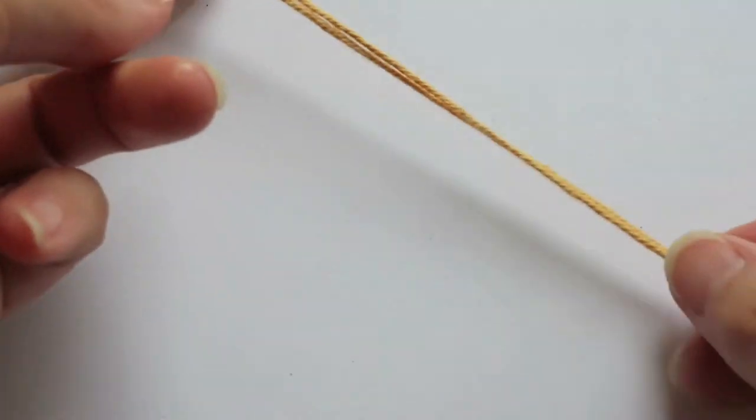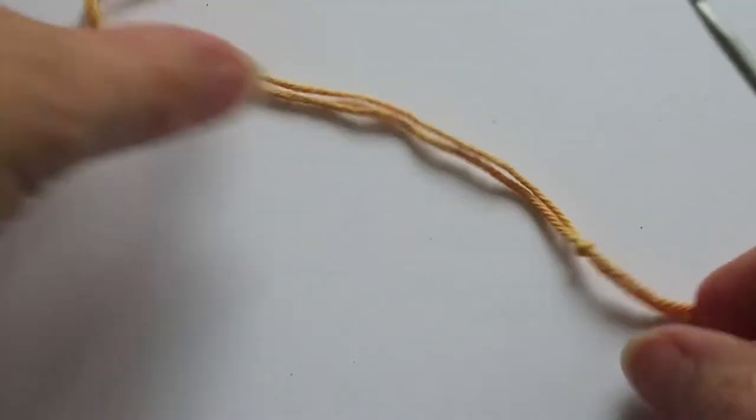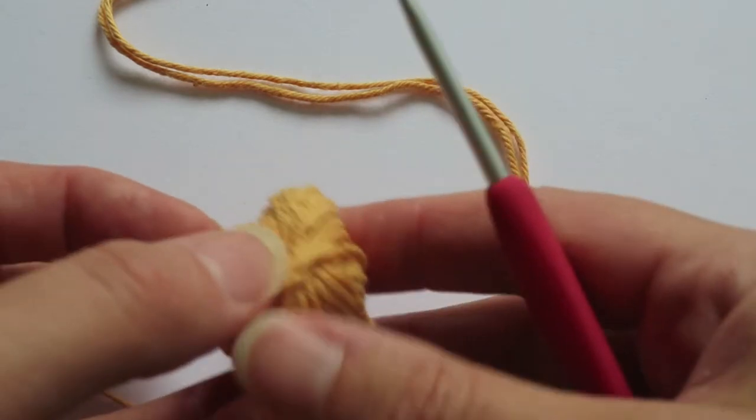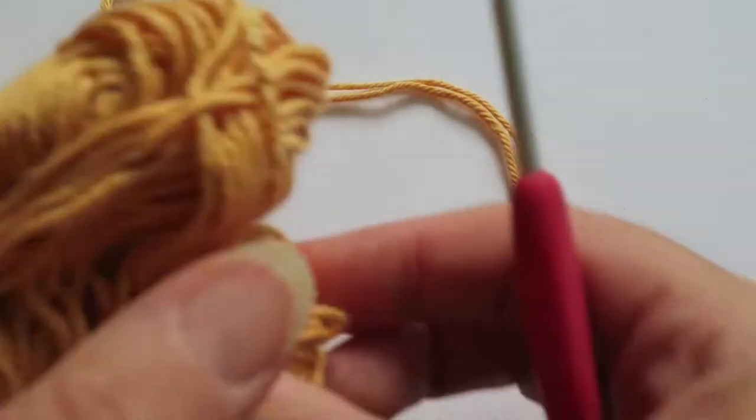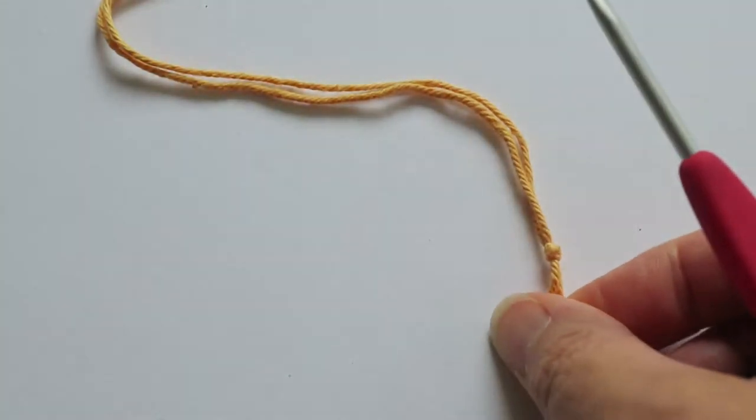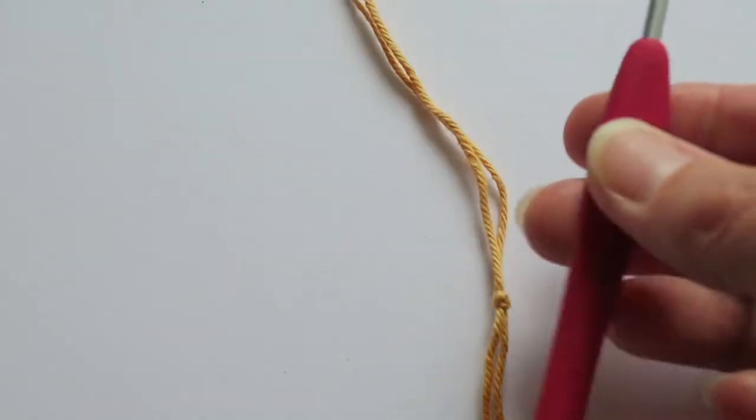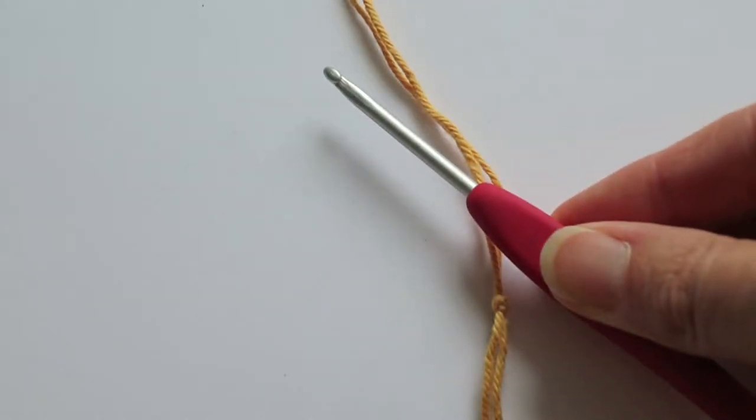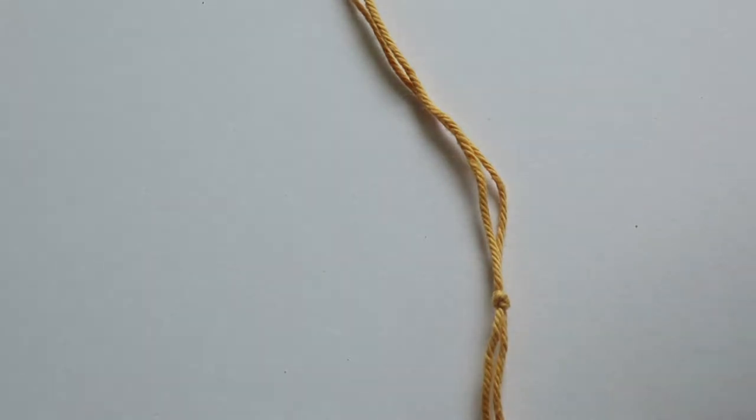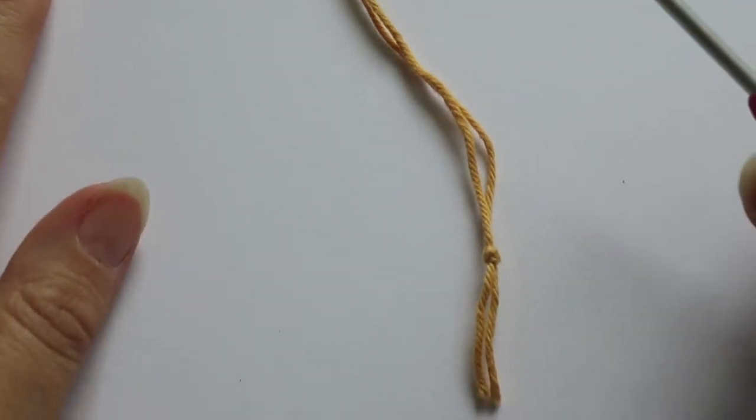So I've got a double strand of double knitting which I've tied at one end. I've just wound off a separate ball from the main skein. I've got a 3.5mm hook. I'm just going to show you how to start off the lucid cord.